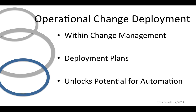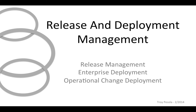The operational change deployment process also unlocks the potential for automation — and the key word there is 'potential,' which will vary widely depending on the maturity of the organization, the technologies being used, and the staff involved. So if you take a step back and look at the three problem areas in release and deployment management, you'll see three processes: release management for communication and planning, enterprise deployment for maximizing human and capital equipment, and operational change deployment for ensuring reliable transition each and every time.